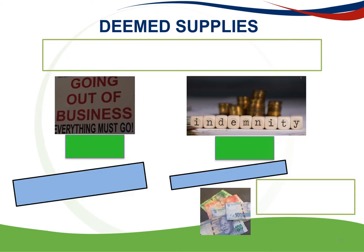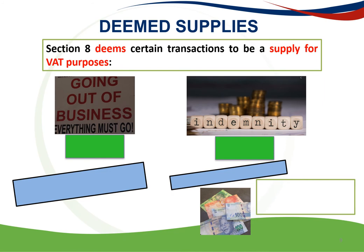To avoid confusion about whether a transaction is a supply or not, and whether certain transactions are deemed to be a supply of goods or services, deemed provisions are contained in Section 8 of the VAT Act. First of these is ceasing to be a vendor. Output tax becomes payable on goods owned by a person on the day he ceases to be a vendor, except for goods in respect of which input tax was denied.